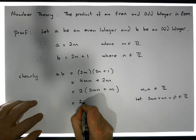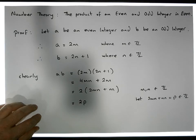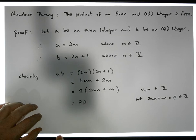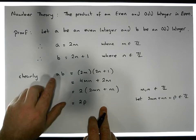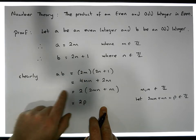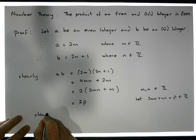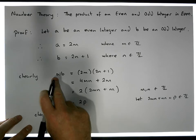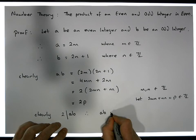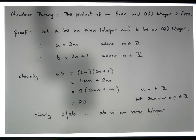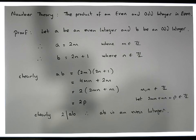So what we now have is that ab must be equal to 2 times some integer p, where p is an integer. An even integer looks like 2 times some number with zero remainder. So we've shown that the product ab, where a is an even integer and b is an odd integer, simplifies to an even integer. Therefore, 2 divides 2p, so 2 clearly divides ab, and therefore ab is an even integer. These are great little proofs for building confidence when working with properties of the integers.